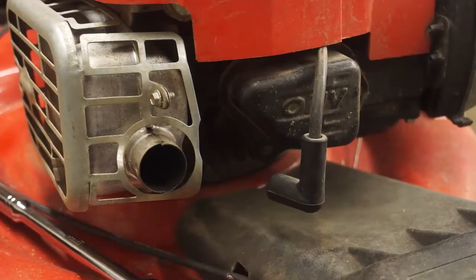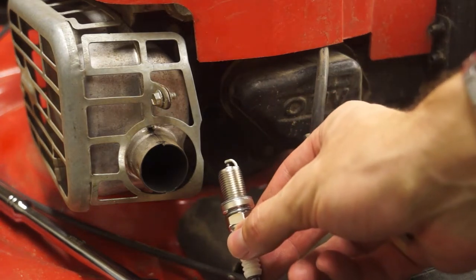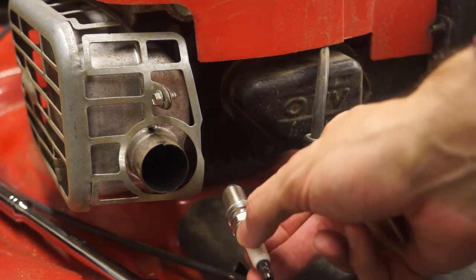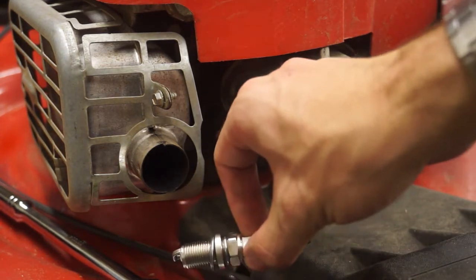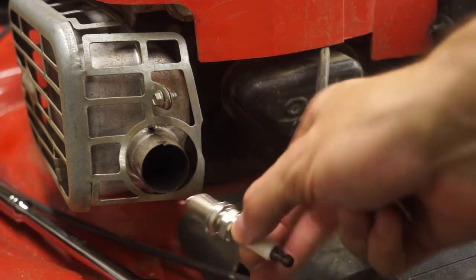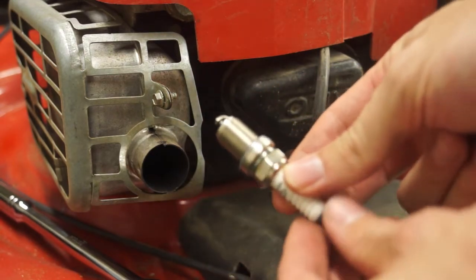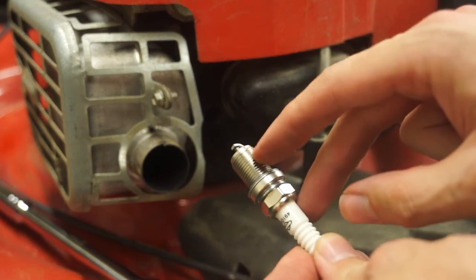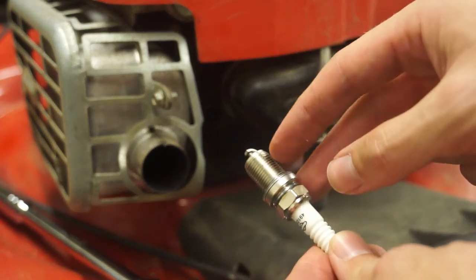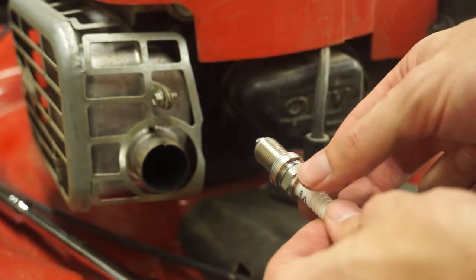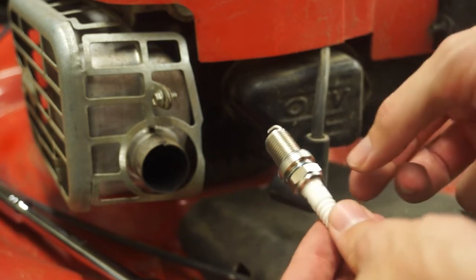I'm gonna take my new spark plug and just go ahead and screw it right back into the engine. It's kind of hard to see where it's going back there, but there's a hole right at the top of the combustion chamber that this goes into. Sometimes it's a good idea to put some anti-seize lubricant on these threads. I unfortunately don't have any right now, so I'm just going to carefully thread this back in, making sure not to cross-thread anything.